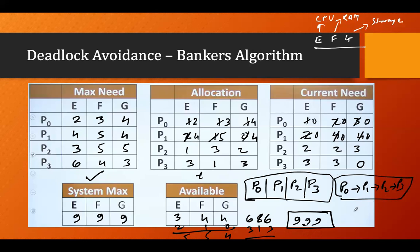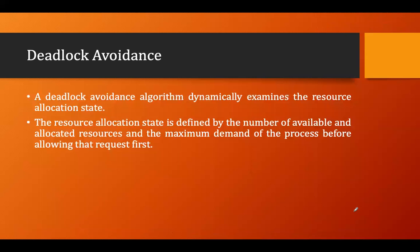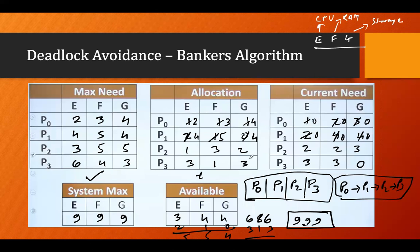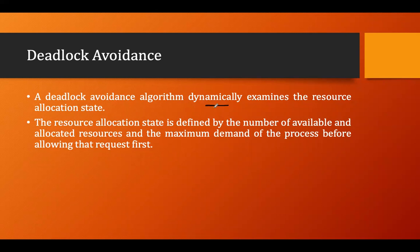The Banker's Algorithm is a dynamic examination of resource allocation. We dynamically calculate the availability of resources and based on the current need, fulfill the request of each process. The resource allocation state is defined by the number of available and allocated resources and the maximum demand of the process before allowing a particular request. We determine maximum demand versus available resources and fulfill requests accordingly; otherwise, the process must wait.